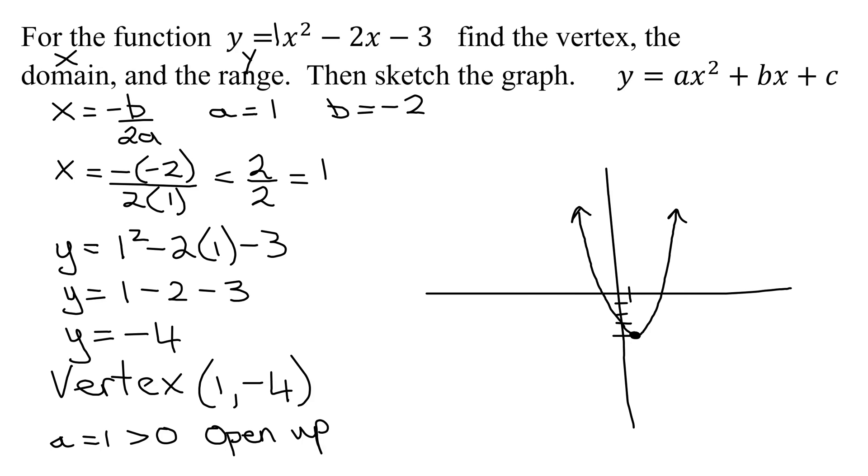So for every quadratic function, the domain is always all real numbers. And in interval notation, that's negative infinity to positive infinity. If you look at the arrows on the end of the parabola, this indicates it keeps going up and to the left. This one keeps indicating it goes up and to the right. So there's nothing stopping it going from negative infinity to positive infinity in the x direction.